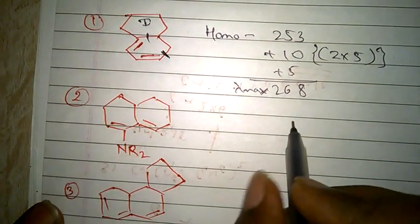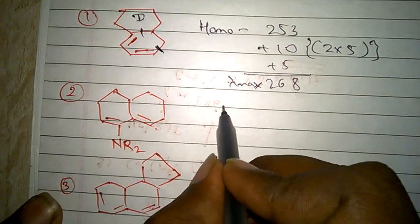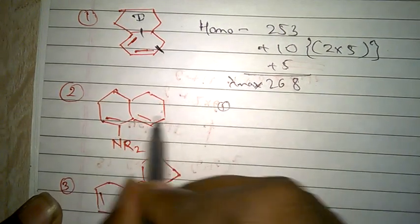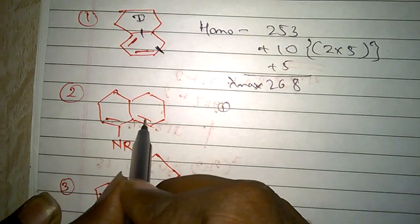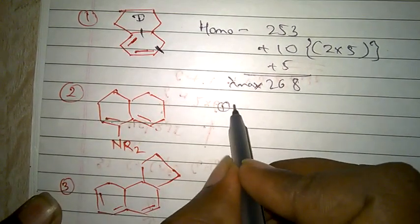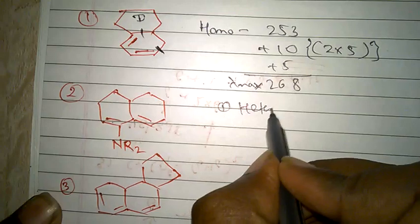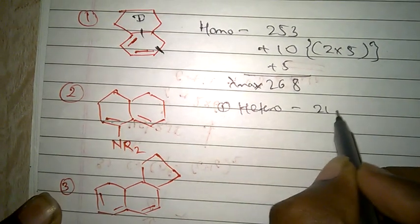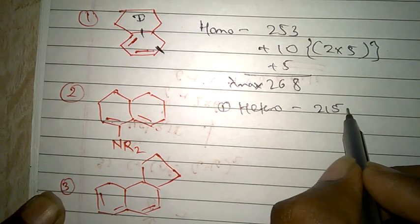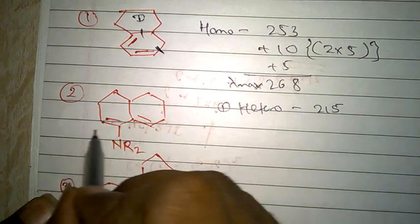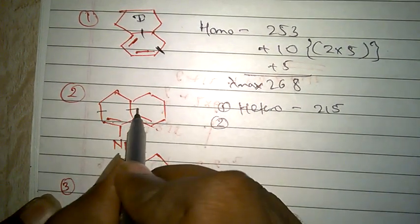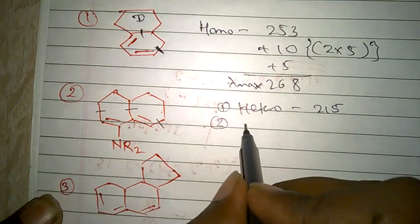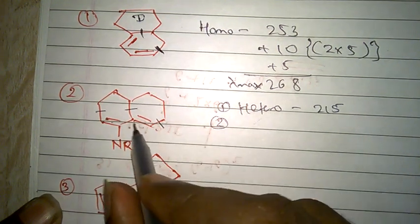Now solving another problem. First, we have to see the parent. The parent here is different dienes in different rings, meaning it is heteroannular. For heteroannular, it is 215.